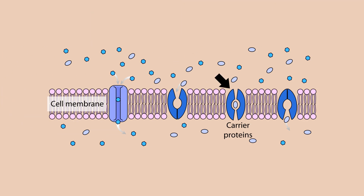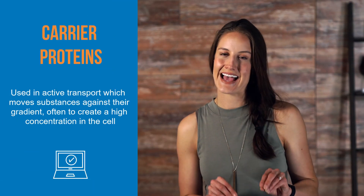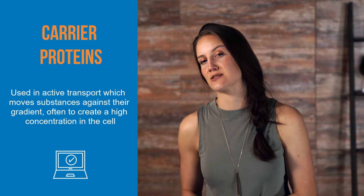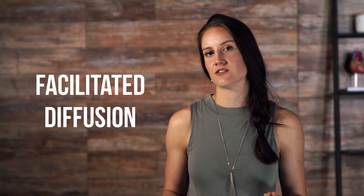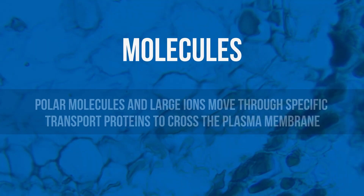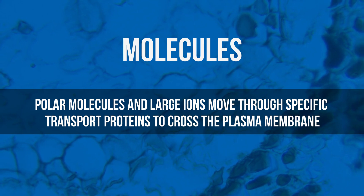Carrier proteins are only open on one side at a time and move specific molecules across the membrane that can react with the carrier's active site, which is where substrates bind to a protein to cause a conformational change, or change in its form and thus function. These carrier proteins are used in active transport, which unlike passive transport, moves substances against their gradient, often to create a high concentration in the cell. Active transport costs energy in the form of ATP to create a conformational change. Another type of transport by carrier proteins is facilitated diffusion, which is a form of passive transport. Polar molecules and large ions can't move through channel proteins; they move through specific transport proteins to cross the plasma membrane.